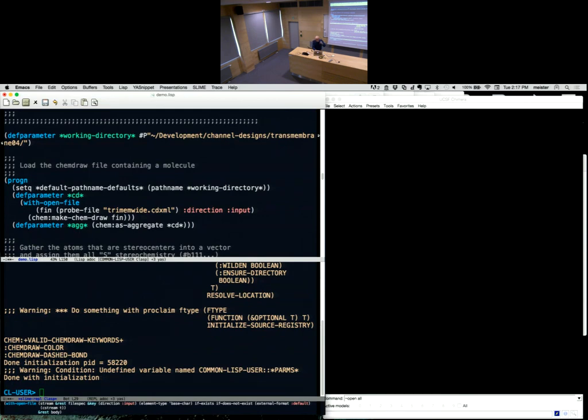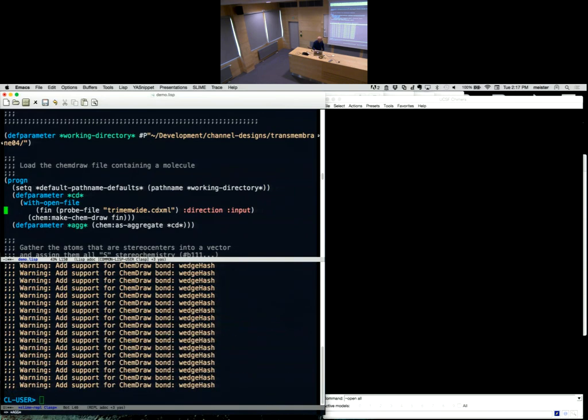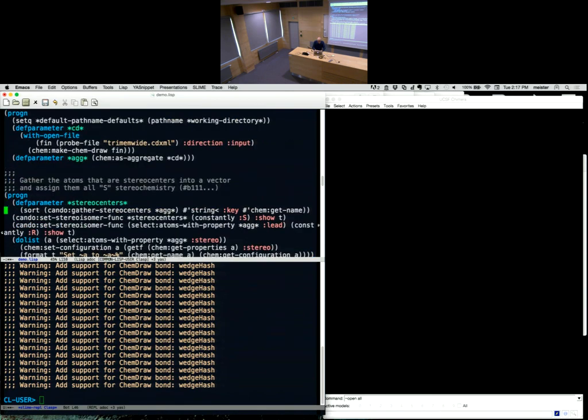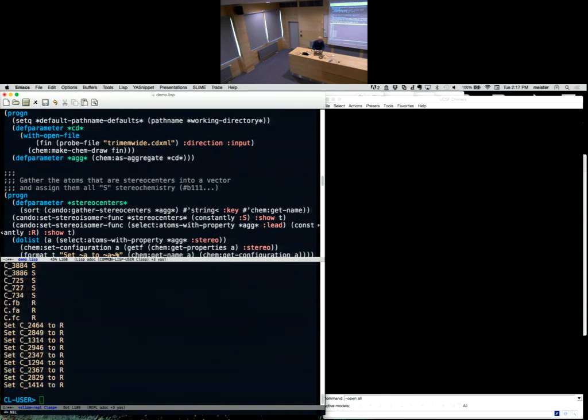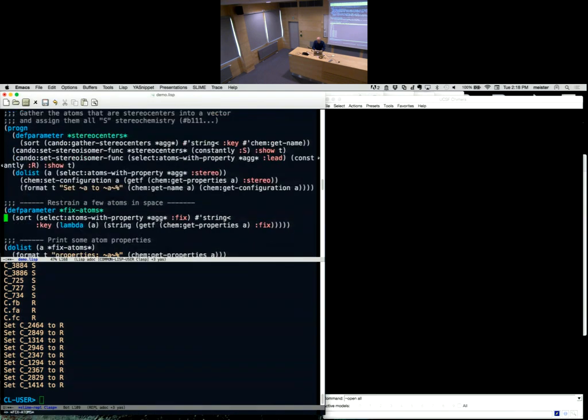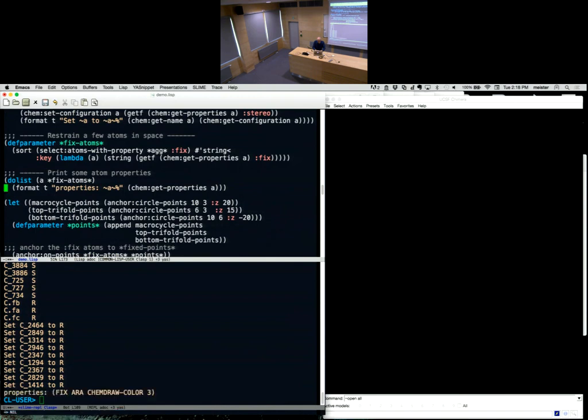Here what I'm doing is I sketch a molecule in a program called ChemDraw, which lets me - it's the program that chemists use to draw molecules. It's like Adobe Illustrator, but for molecules. And so we sketch a molecule in there, and I can write it out as an XML file from ChemDraw. And so CanDo can load this XML file, and it builds a graph of the molecule, but it doesn't have any three-dimensional coordinates or anything. I can set a thing called stereochemistry. Every carbon can have what's called S or R stereochemistry. It's two different three-dimensional arrangements of groups around it.